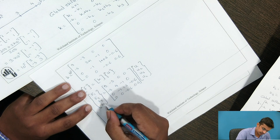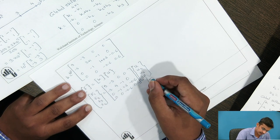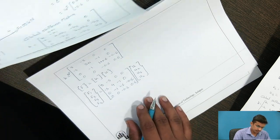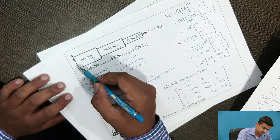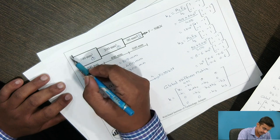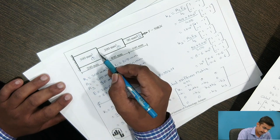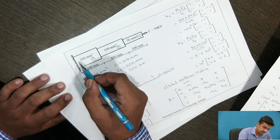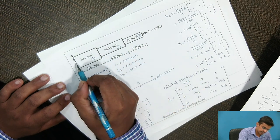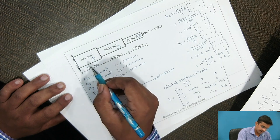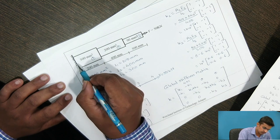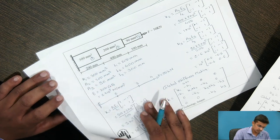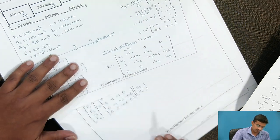Now we substitute the known values of forces and deformations. The beam is fixed (constrained) at one end, so the deformation at that node is 0. The reaction forces are applied at that particular node. The applied load is 50 kN, but the deformation at the fixed node is 0.